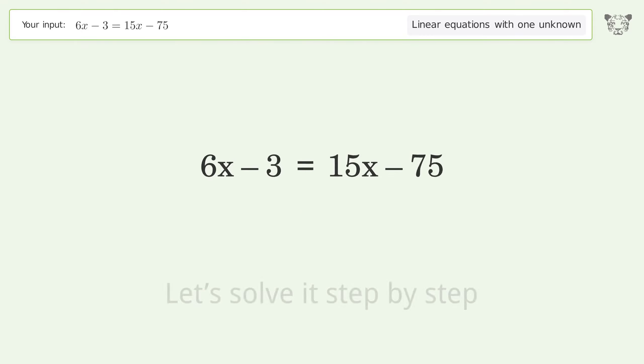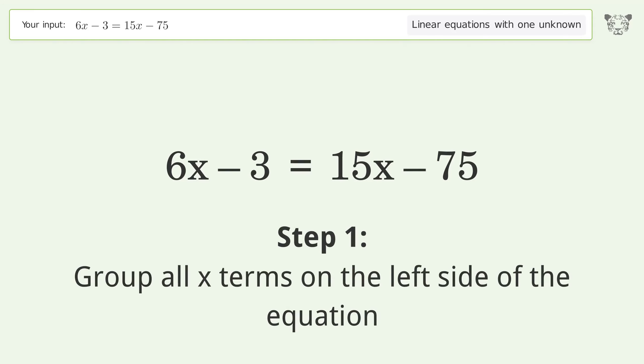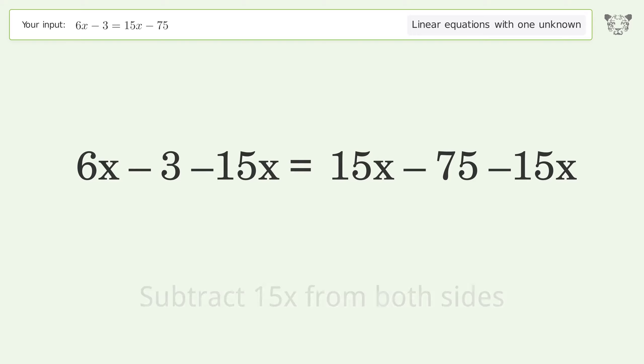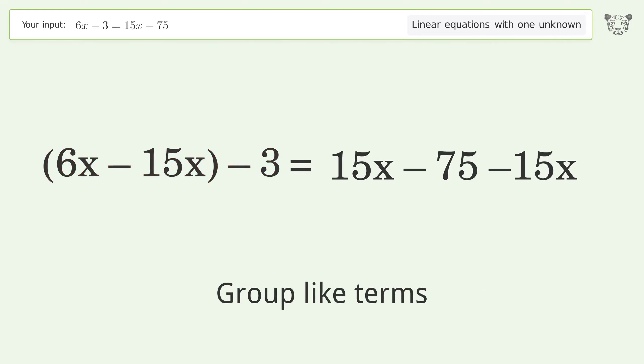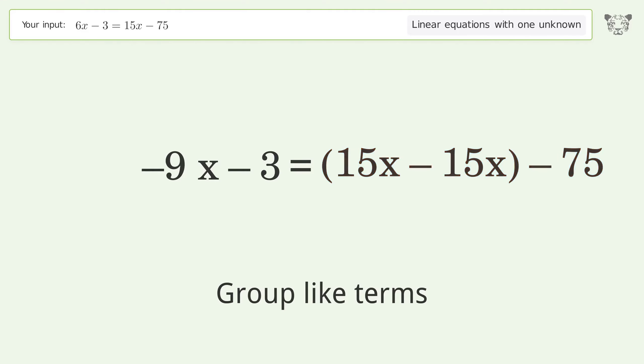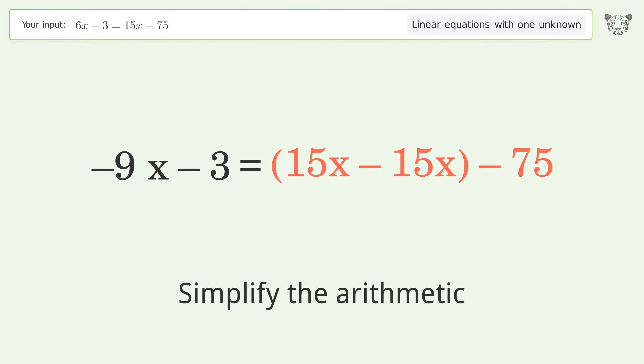Let's solve it step by step. Group all x terms on the left side of the equation. Subtract 15x from both sides. Group like terms. Simplify the arithmetic. Group like terms. Simplify the arithmetic.